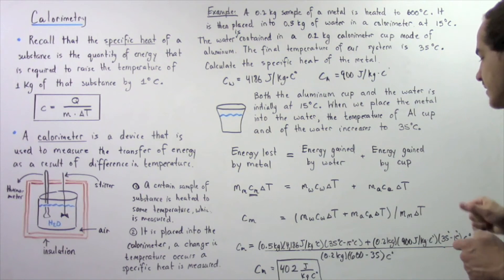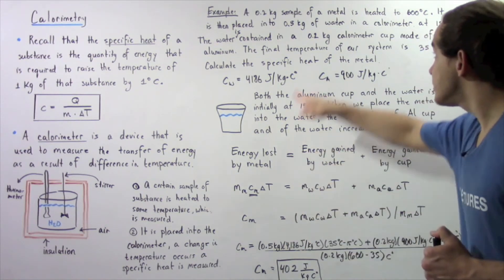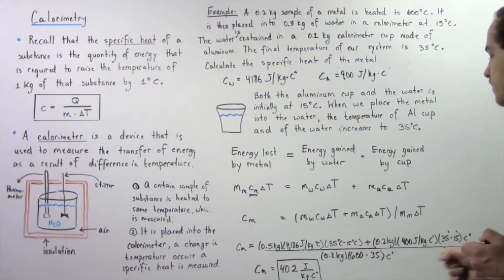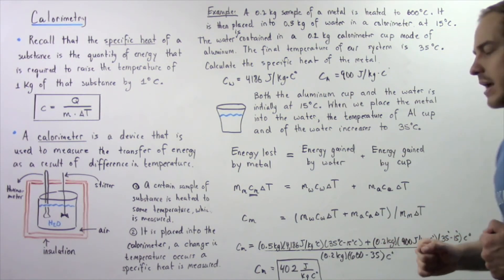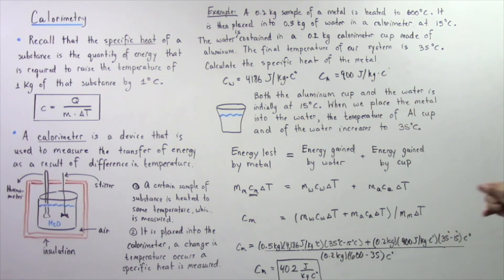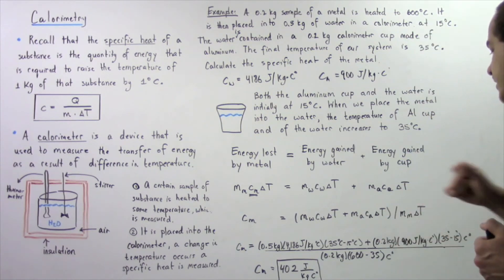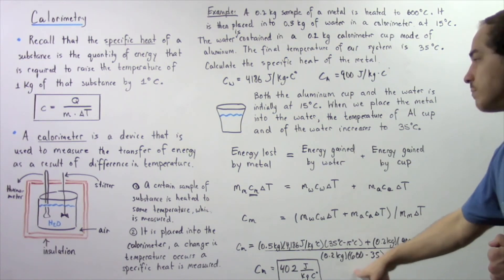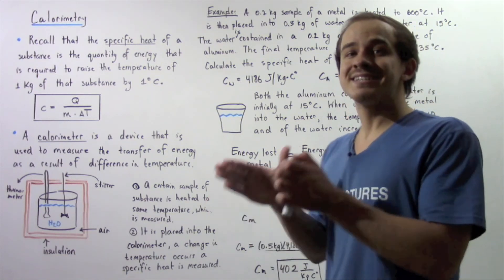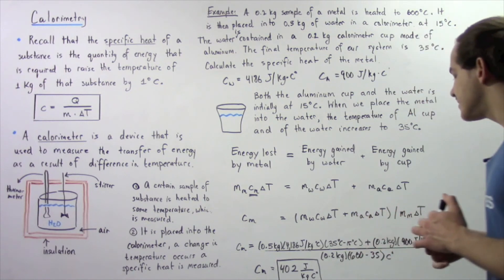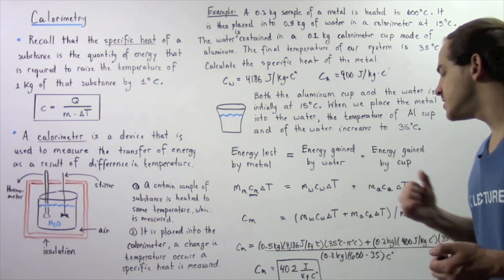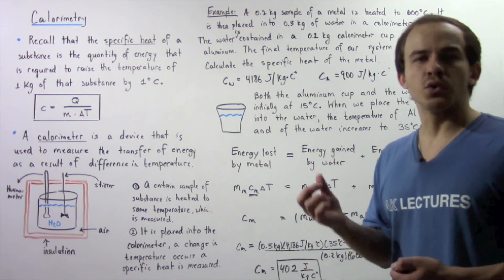Plugging in the known quantities: the mass of water is 0.5 kg, the specific heat of water is 4186 J/(kg·°C), and the change in temperature of the water is 35 − 15 = 20 °C. The mass of the cup is 0.2 kg, the specific heat of aluminum is 900 J/(kg·°C), and its temperature change is also 20 °C. We divide by 0.2 kg (mass of the metal) and its temperature change of 600 − 35 = 565 °C. Adding and dividing gives a specific heat of approximately 402 joules per kilogram times Celsius.